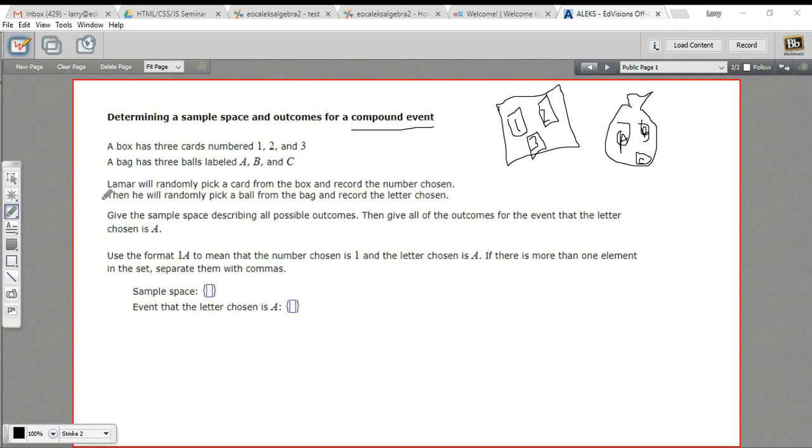So let's look at what this problem is asking. It says Lamar will randomly pick a card from the box and record the number chosen. Then he will randomly pick a ball from the bag and record the letter chosen. Give the sample space describing all the possible outcomes, then give all of the outcomes for the event that the letter chosen is A.